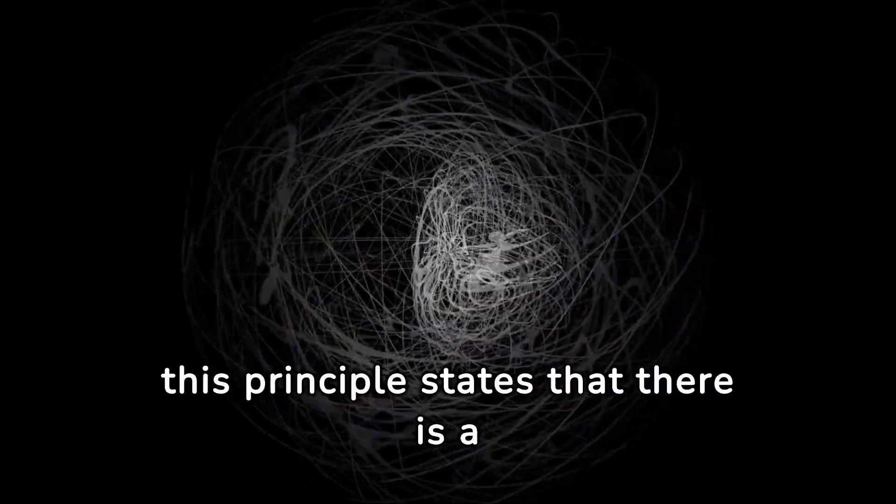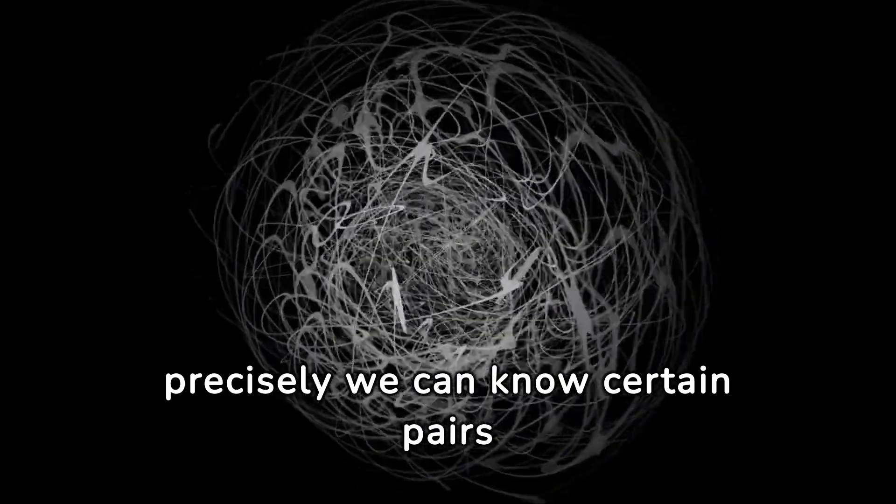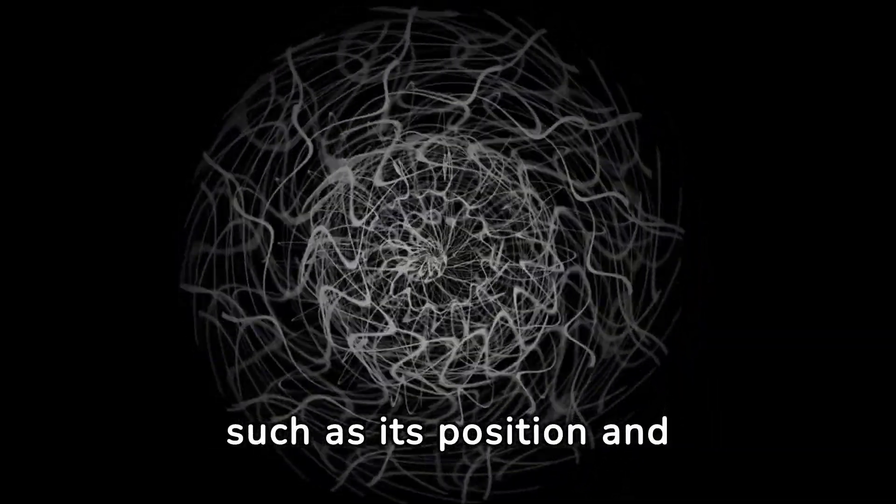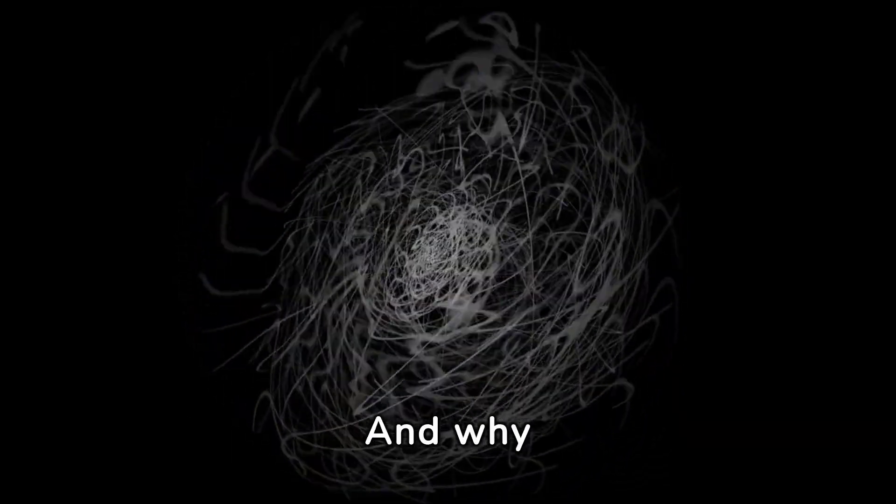Simply put, this principle states that there is a fundamental limit to how precisely we can know certain pairs of properties of a particle, such as its position and its velocity. But what does it really mean? And why is it so important?